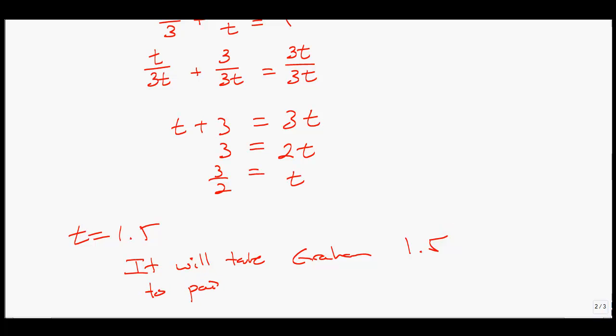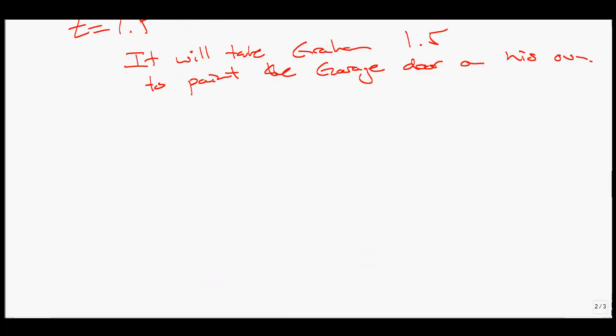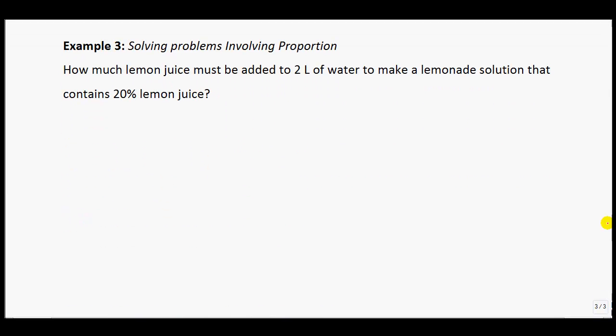That concludes that question. Let's go to the last type: solving questions involving proportion. Here we have one that looks pretty simple. How much lemon juice must be added to 2 liters of water to make a lemonade solution that contains 20% lemon juice? I'm going to use a let statement. Let v equal the volume of lemon juice added, in terms of liters.